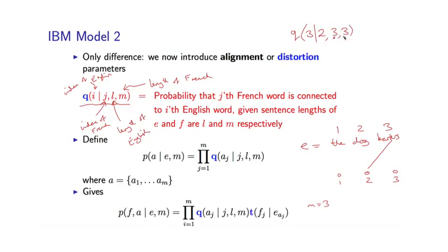So conditioned on the length of the English and the length of the French sentence, and conditioned on the position of the French word we're considering — position 2 in this particular example — we have a distribution over all possible alignments. Position 0 is taken to be the null word, and that is one possibility. We'll come to a concrete example in a moment.